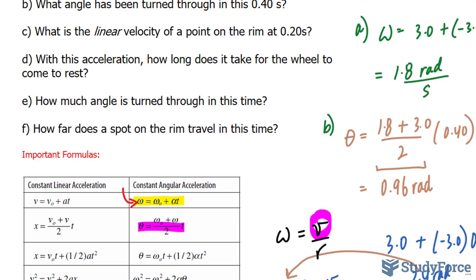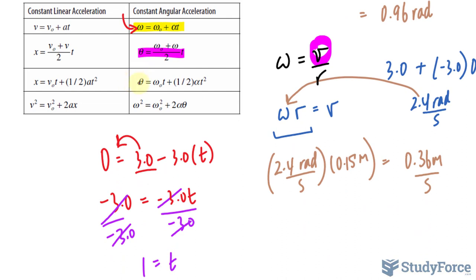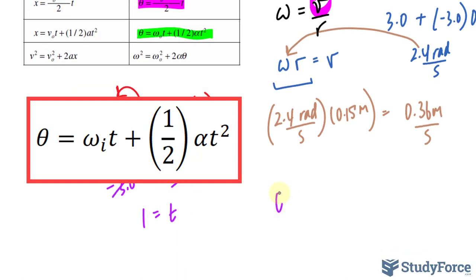For question E, how much angle is turned through in this time? So, we need to use a formula that uses the angle symbol. Make sure you use this one, because that also incorporates time. So, I have theta is equal to 3.0, the time is 1 second, plus 0.5 to represent that factor of half, times negative 3.0, 1 to the power of 2.